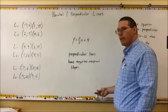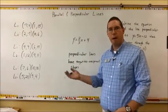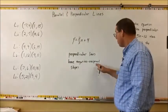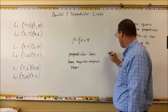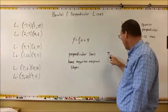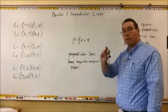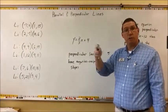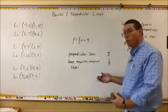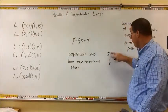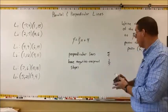Negative just means that if the slope starts out positive, it becomes negative, and vice versa. Reciprocal means you take a fraction and flip it over. For example, the reciprocal of five — which is the same as five over one — is one-fifth. So one-fifth is the reciprocal of five.